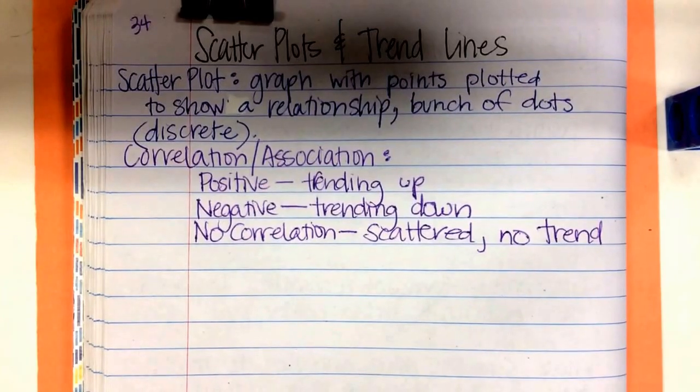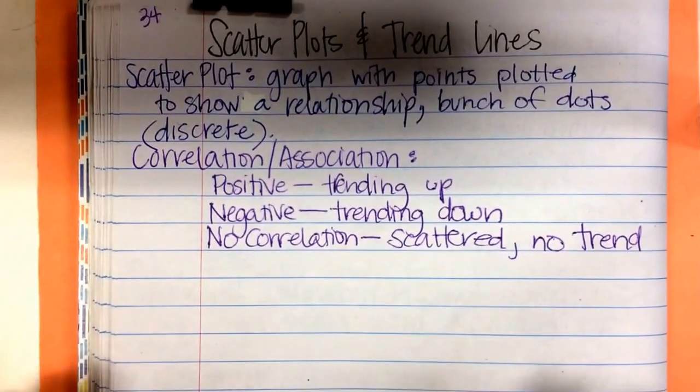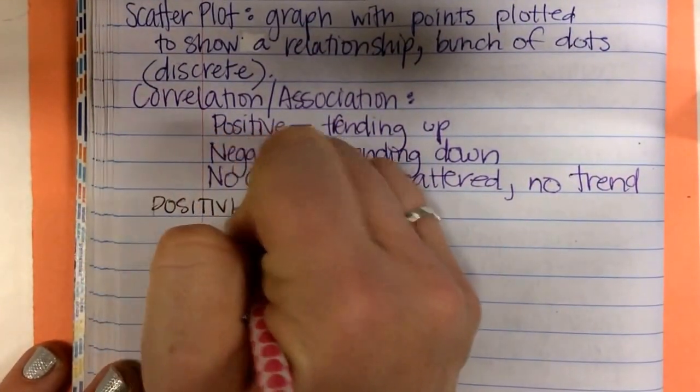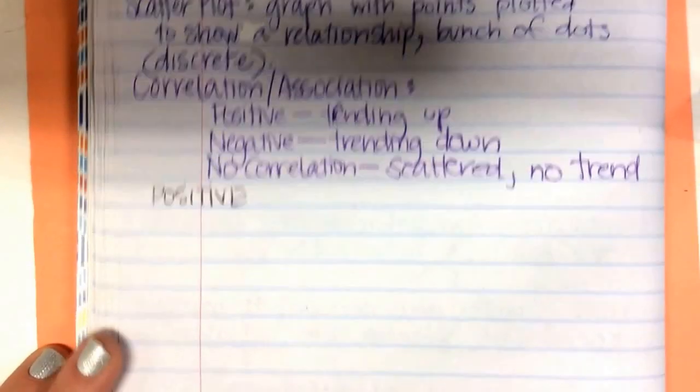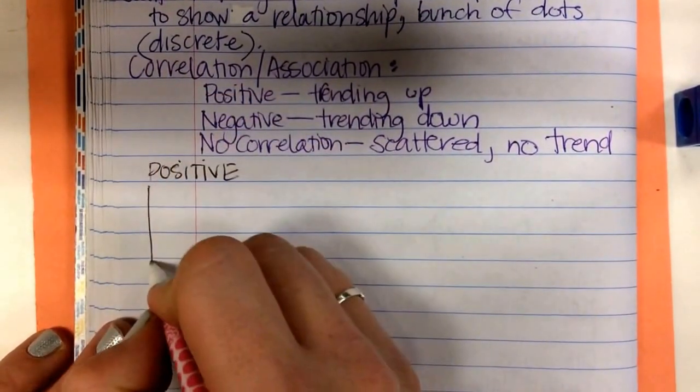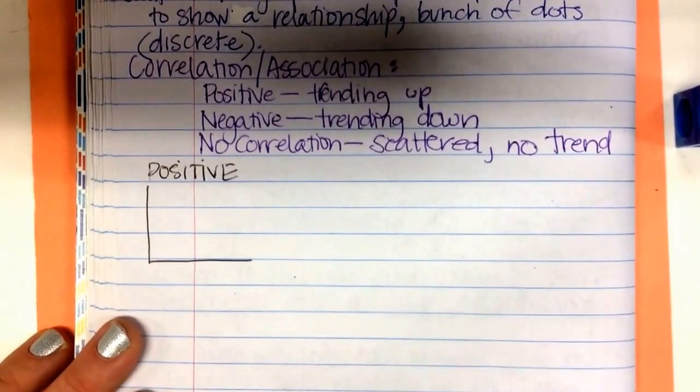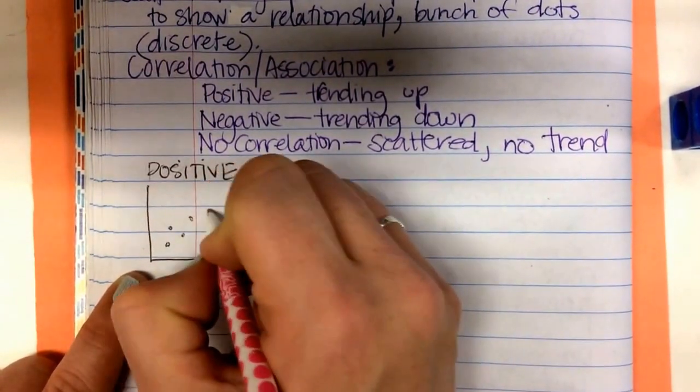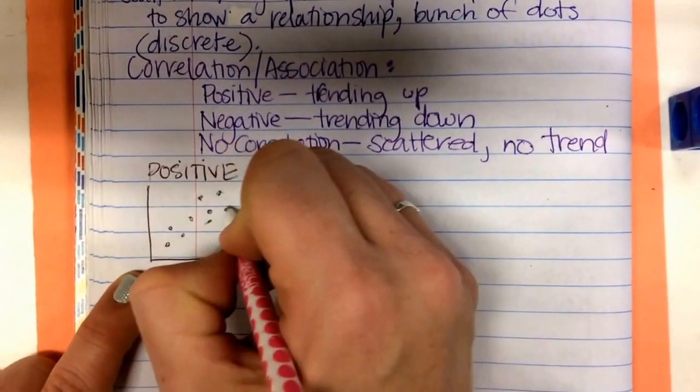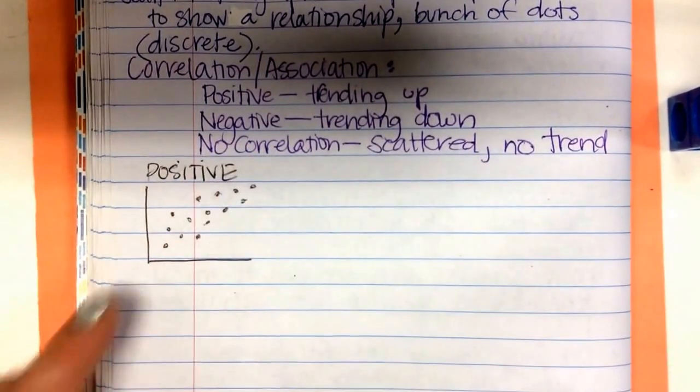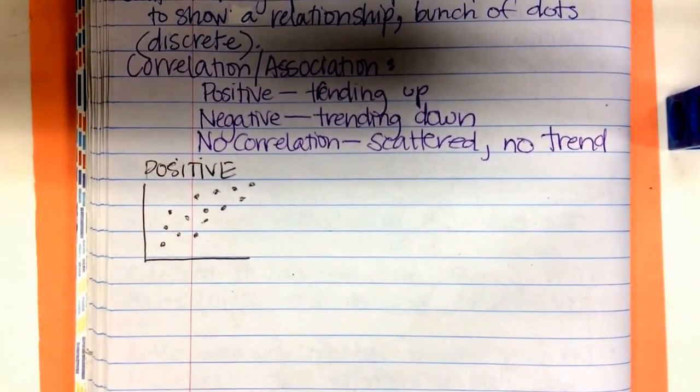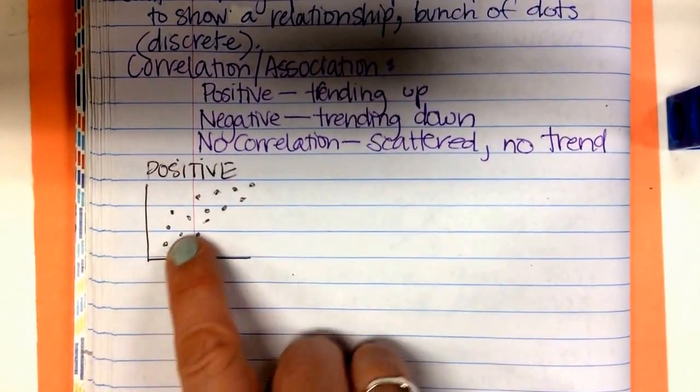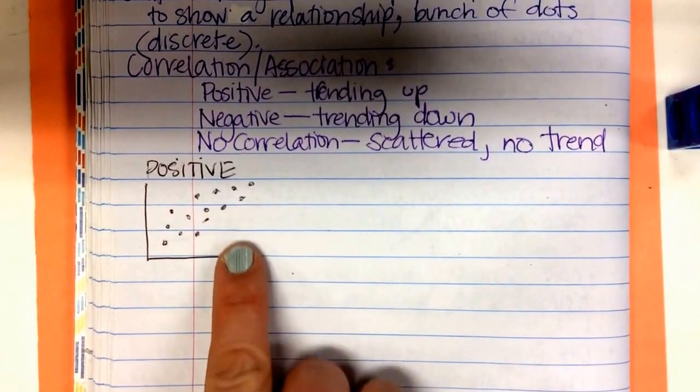So let's draw three different graphs. The first one is going to be a positive correlation. And again, it doesn't have to be beautiful. We're just going to use the first quadrant. And put random dots. Can you see how this is a positive correlation? It's going up. As you move across the graph, your data gets higher.